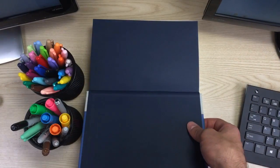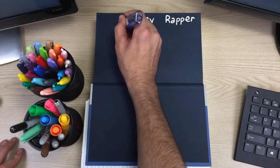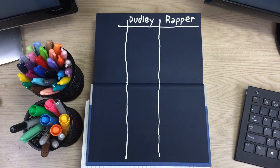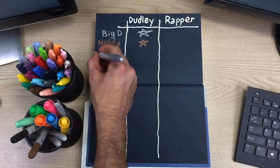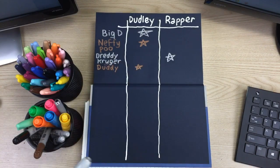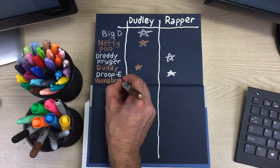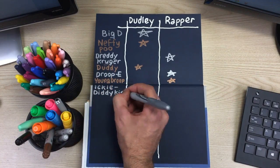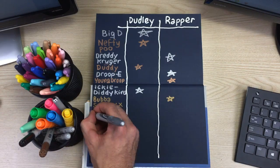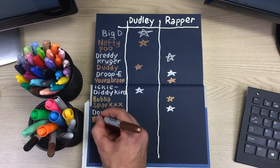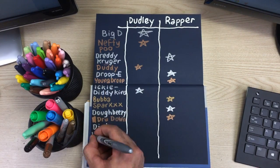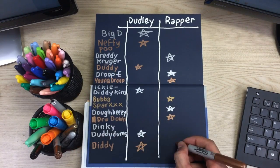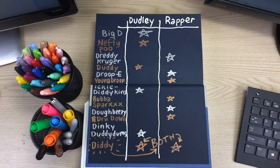In book number 5, Dudley receives increasingly ridiculous nicknames from his mother, aunt, and father, to the point that they sound kind of like rapper stage names. So let's play a game — I'll give you a name, and you decide: is this a Dudley nickname or a rapper name? Big D — Dudley name. Nephy Poo — Dudley name. Dreddy Kruger — rapper name. Duddy — Dudley name. Droop E — rapper name. Young Droop — rapper name. Icklediddykins — Dudley name. Bubba Sparks — rapper name. Doe Beezy — rapper name. Drewdown — also a rapper name, and these are not made-up rapper names, you can Google them, they're for real. Diddy Duddy Dums — that's Dudley's name. And finally, Diddy — which is both a Dudley nickname and the name of a rapper.